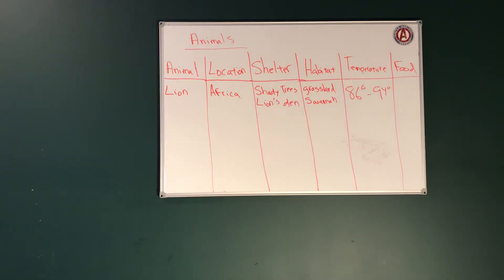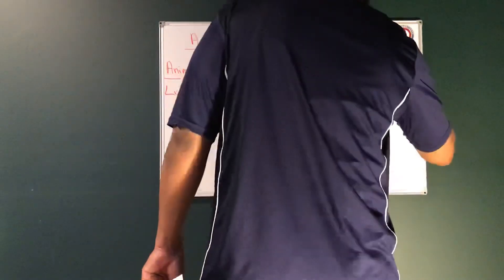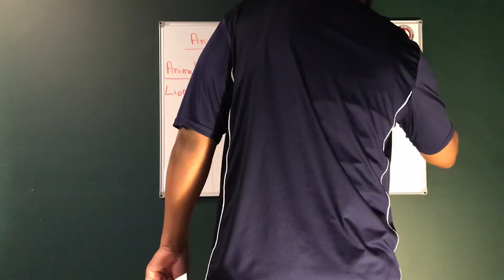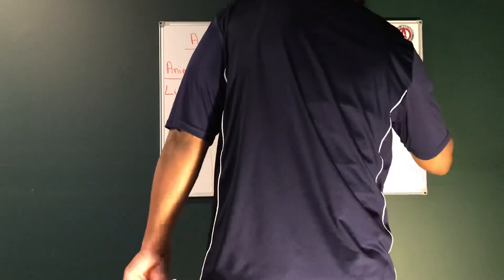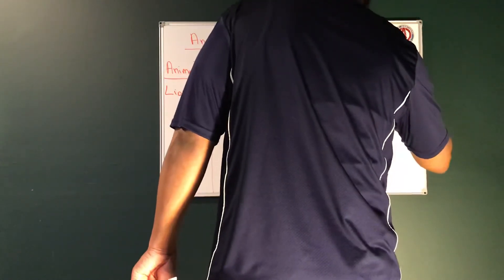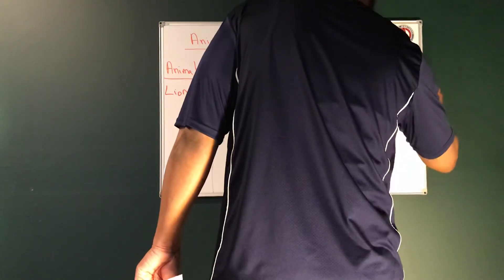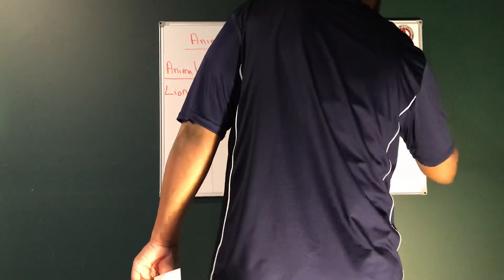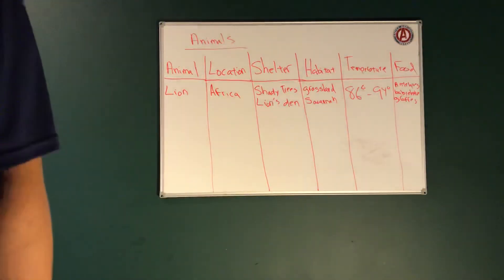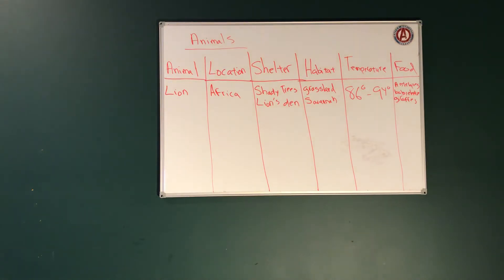Next, we're going to talk about some of the foods that a lion would eat. Lions eat lots of different foods — they eat antelopes, they eat baby elephants, they eat giraffes. So a lion has quite a varied diet.